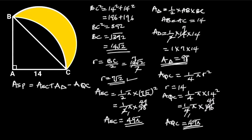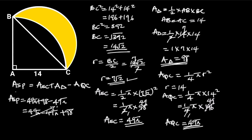Now we know the area of the semicircle, the area of triangle ABC, and the area of the quarter circle. The area of the shaded portion is equal to 49 pi plus 98 minus 49 pi. Collecting like terms gives us 49 pi minus 49 pi plus 98. 49 pi minus 49 pi equals 0. Hence, the area of the shaded portion is equal to 98 square units.